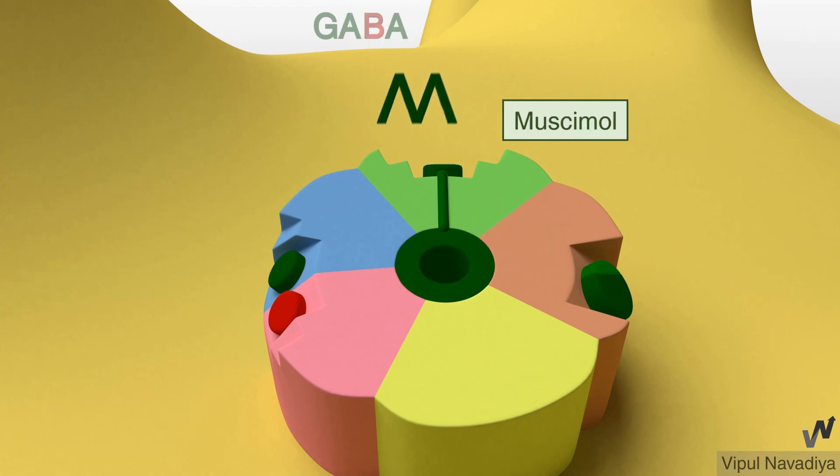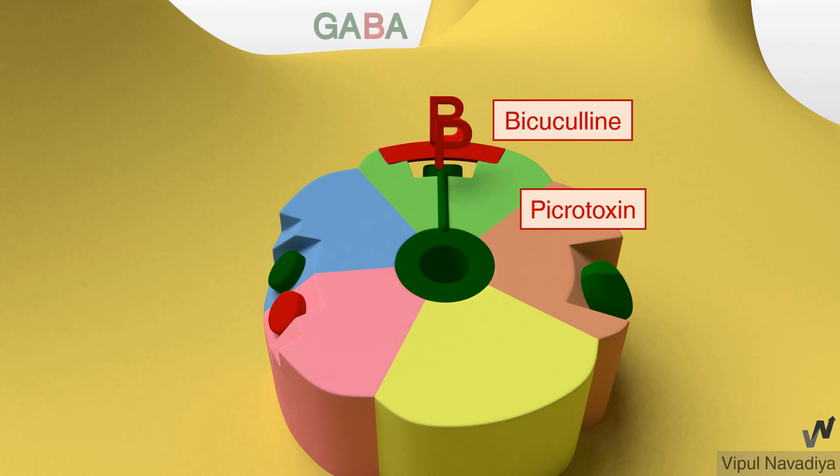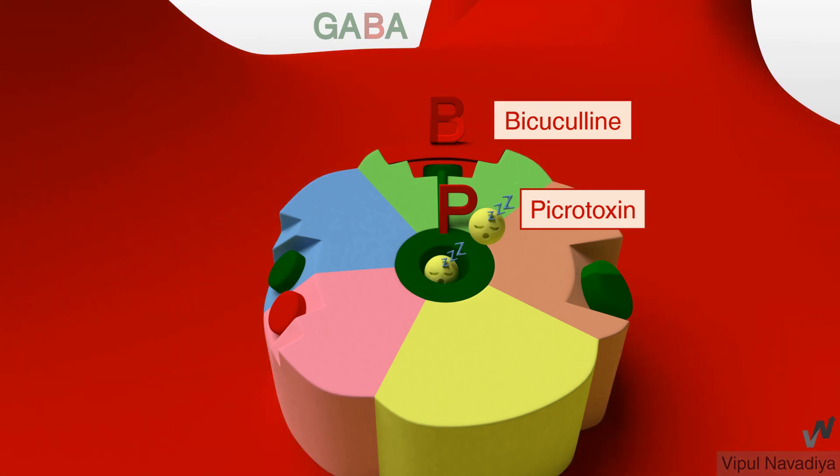Muscimol is a competitive agonist at this site. Like GABA it calms the neuron down. Bicuculline is a competitive antagonist. And picrotoxin is a non-competitive antagonist. Both of them block the effect of GABA and make the neuron more excitable which may even lead to convulsions.